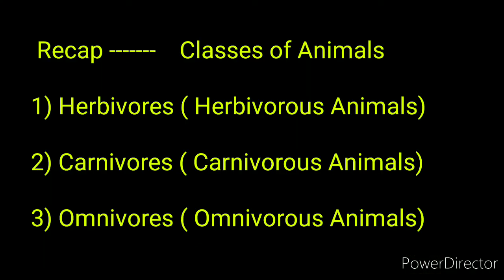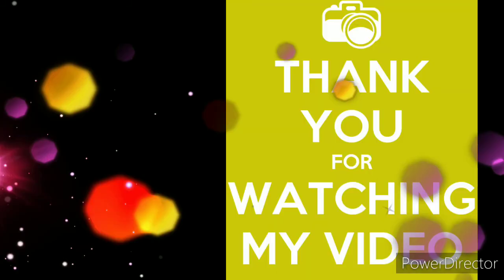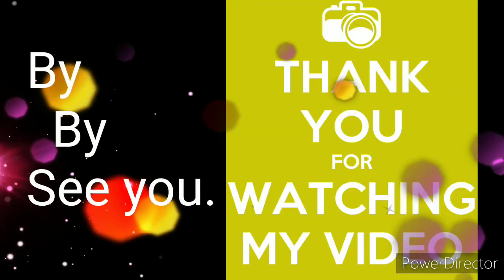So children, let's take a recap of what we learned today. We learned three classes of animals: first, herbivorous animals; second, carnivorous animals; and third, omnivorous animals. I hope all of you understood these classes of animals. Today we stop here, and we will see the next point in the next lecture. Till then, bye bye, see you.